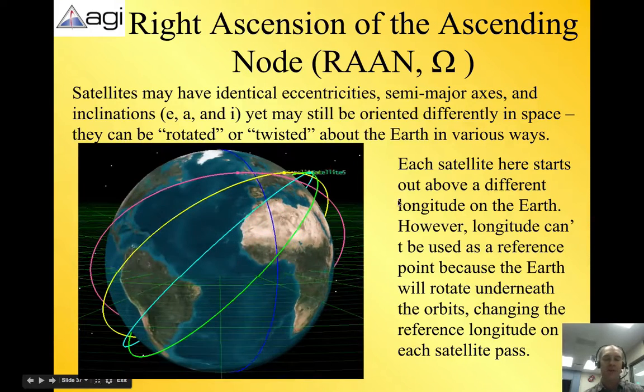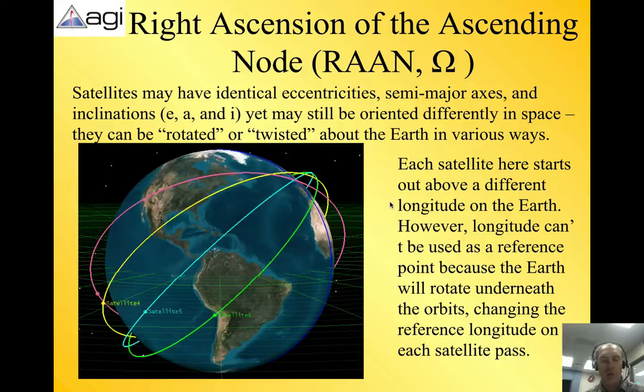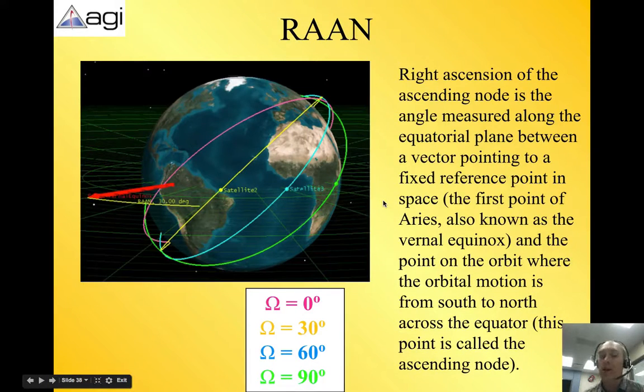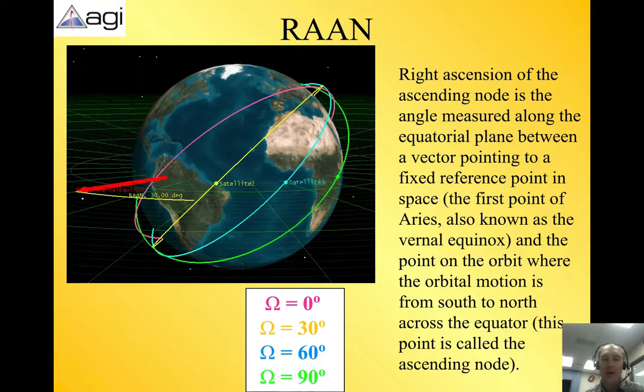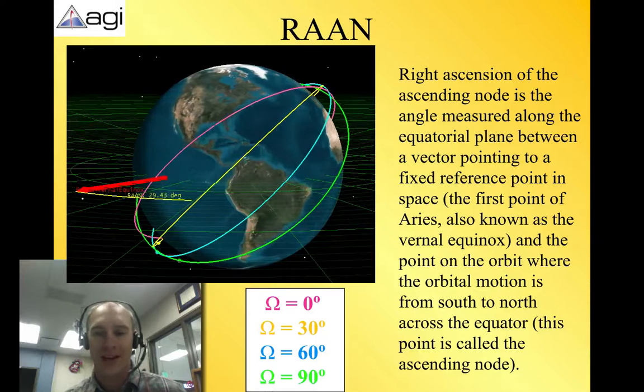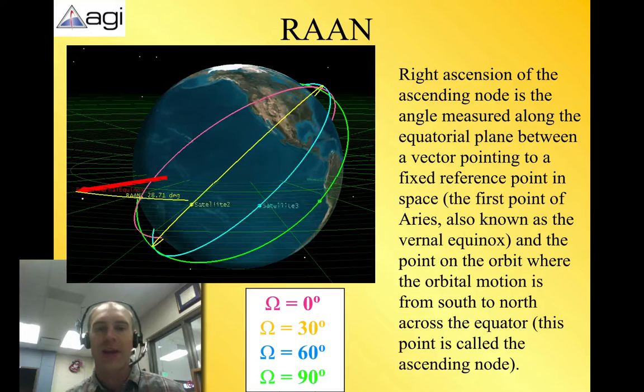So taking a look at this, just watch this video here, and see if it makes a little bit more sense as you watch what's going on. Right ascension of the ascending node is the angle measured along the equatorial plane between a vector pointing to a fixed reference point in space. So the first point of Aries, that's the space that we are picking. We're just picking a star that is, we're calling it fixed in space.